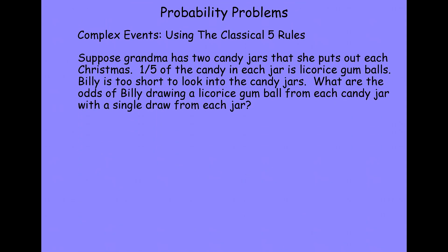Suppose Grandma has two candy jars that she puts out each Christmas, and a fifth of the candy in the jars is licorice gumballs. Billy's too short to actually look into the candy jars, so he can't choose and he just reaches in and grabs. What are the odds of Billy drawing a licorice gumball from each candy jar with a single draw from each of the jars?